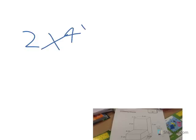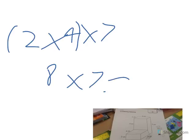One is 2 times 4 times 7. You do these two first and you get 8. 8 times 7 equals... Let's keep that up here. 56.